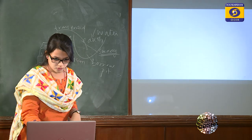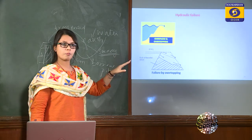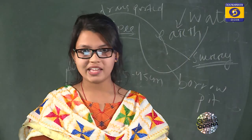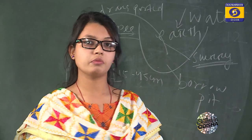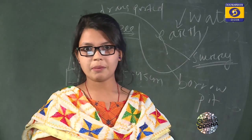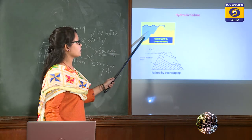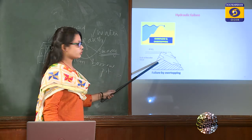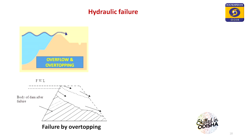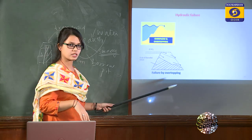Under hydraulic failure, the first cause is overtopping — washing away of the crest. This occurs when flood discharge is more than the estimated flood, when spillways have insufficient capacity or gates are not operating properly, or when an improper freeboard is provided. Freeboard is the difference between the top of the dam and the maximum water level; if insufficient freeboard is given, overtopping can occur.